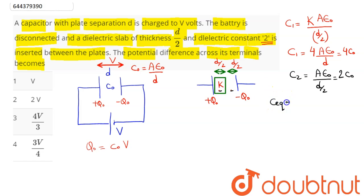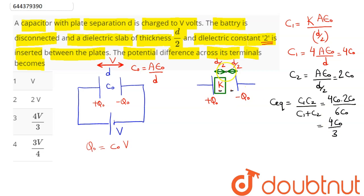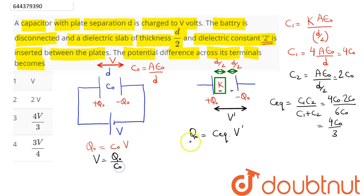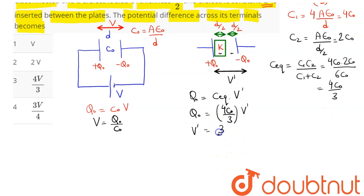The equivalent capacitance C_eq = (C1 · C2) / (C1 + C2) = (4C₀ · 2C₀) / (6C₀) = 4C₀/3. The new potential V' satisfies q₀ = C_eq · V', so V' = q₀ / C_eq = (3/4) · (q₀/C₀) = 3V/4. Therefore option 4, which is 3V/4, is the correct answer.